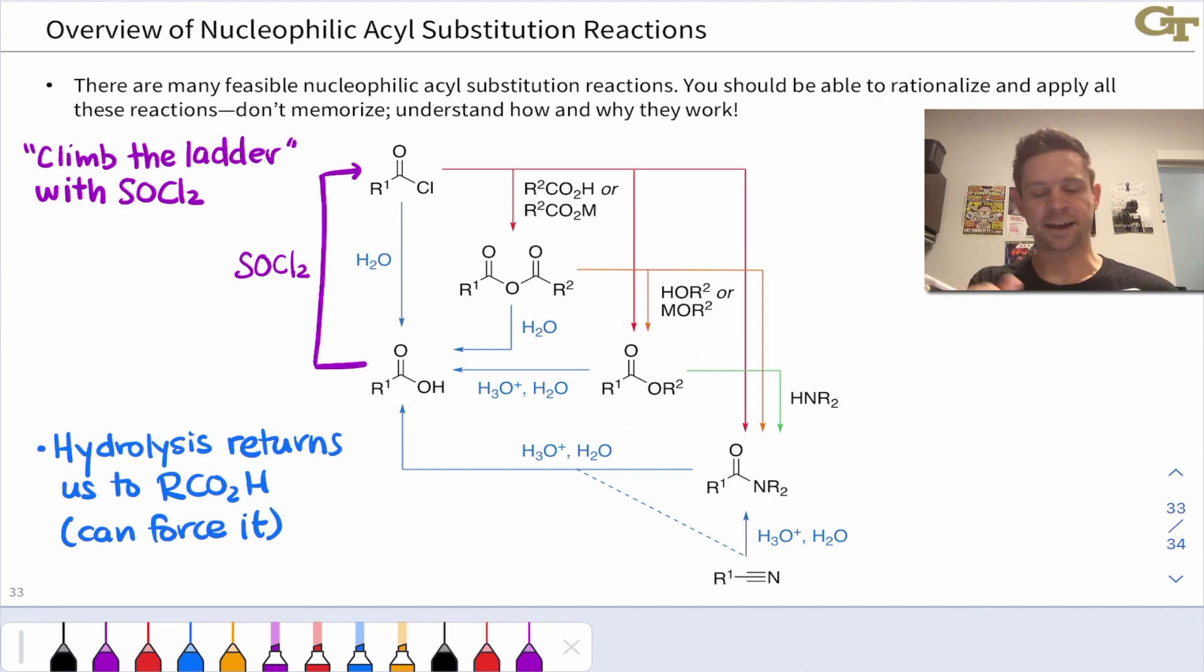Say I'm looking at an ester. I can hydrolyze that ester to a carboxylic acid, that's step one, and then use thionyl chloride to convert the carboxylic acid into an acyl chloride. So this is convenient for synthesis. It provides sort of a roundabout way to get to any carboxylic acid derivative, no matter which carboxylic acid derivative functional group you start with.